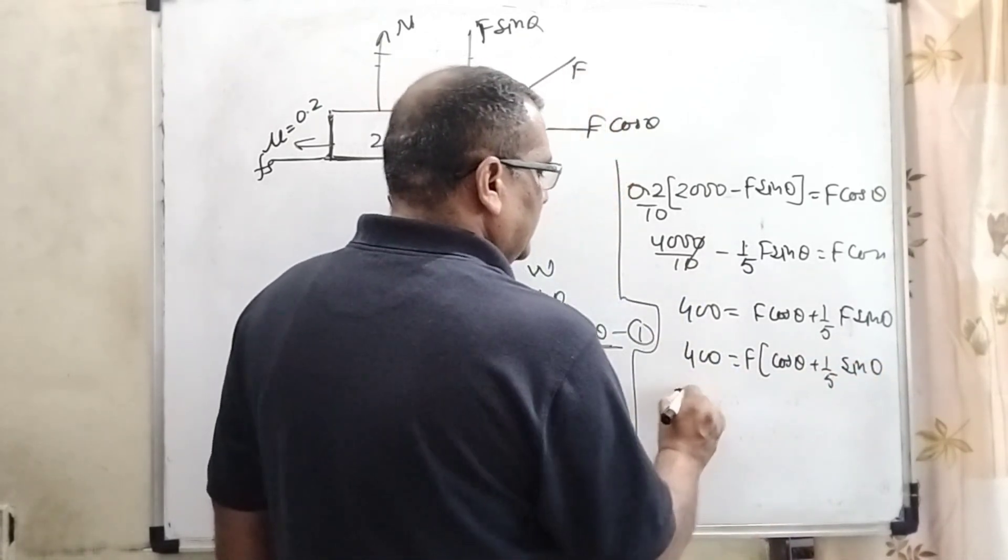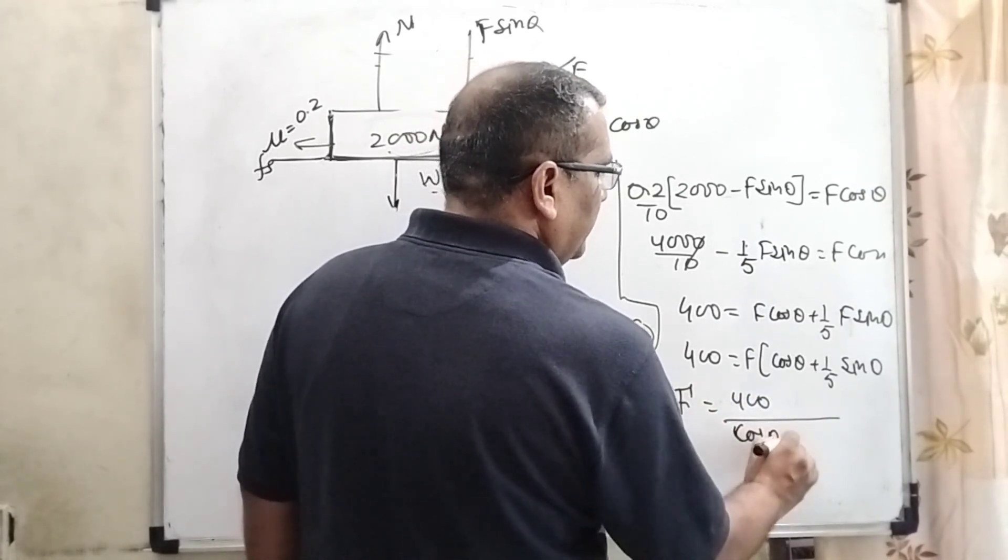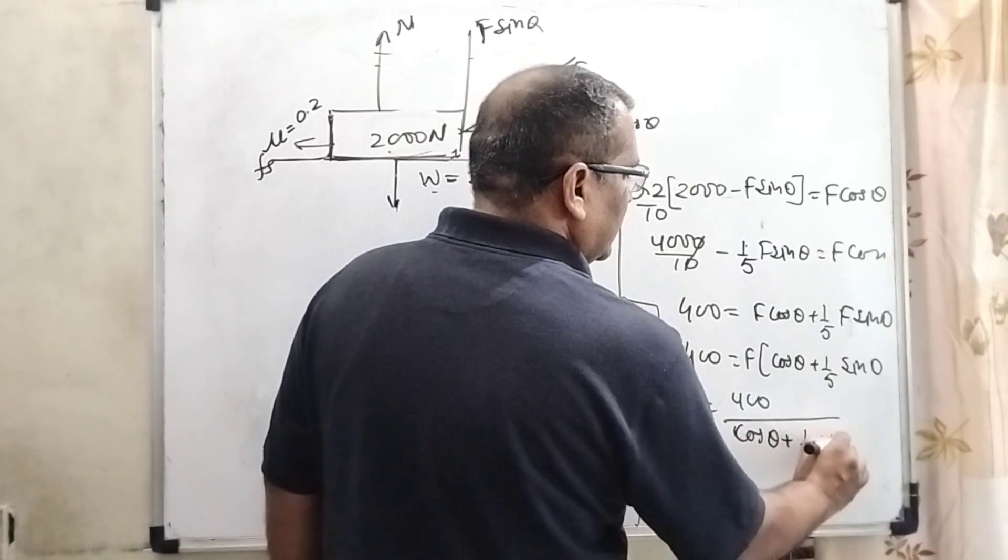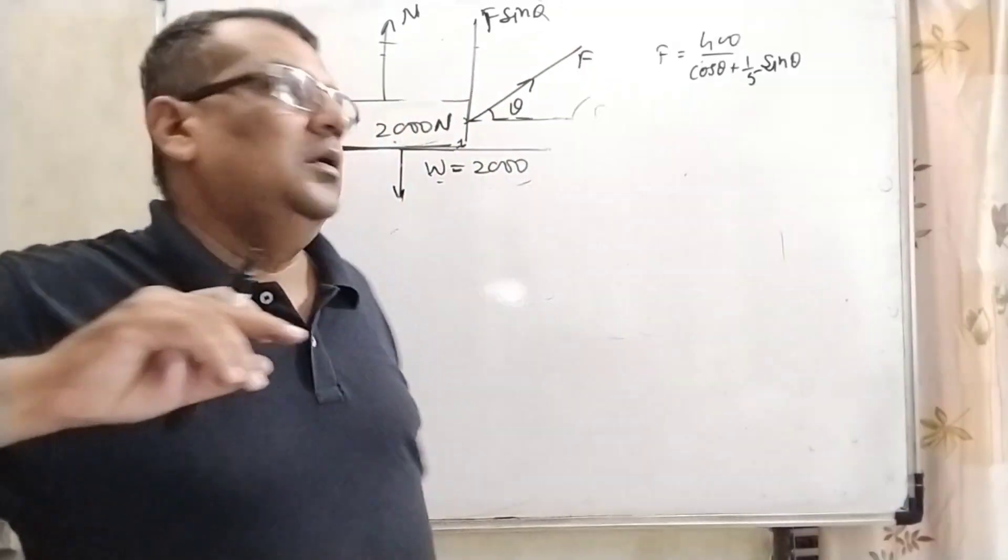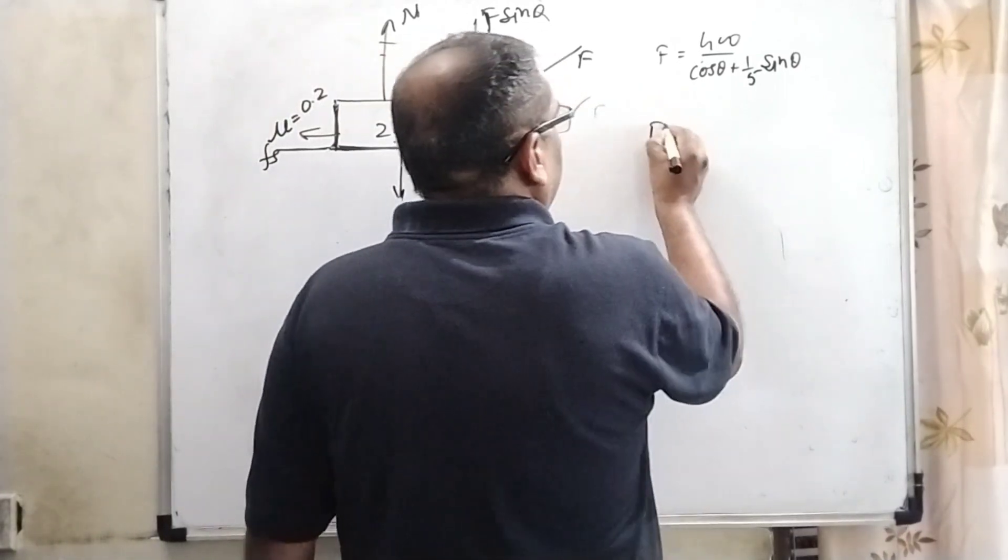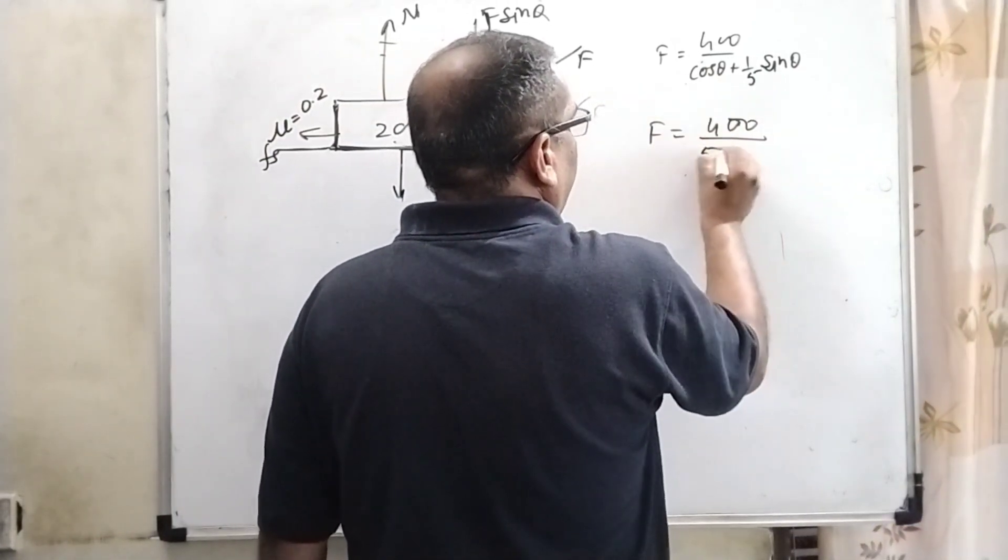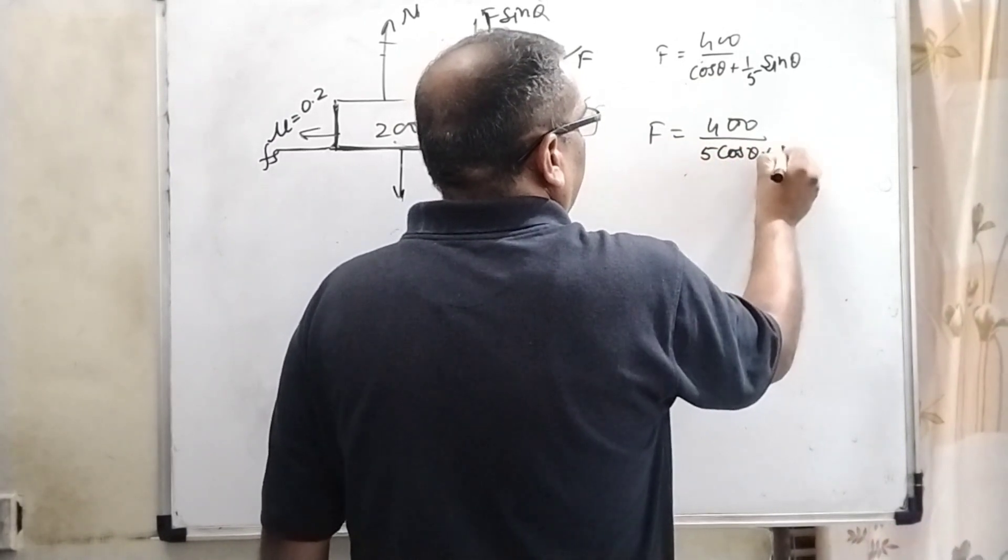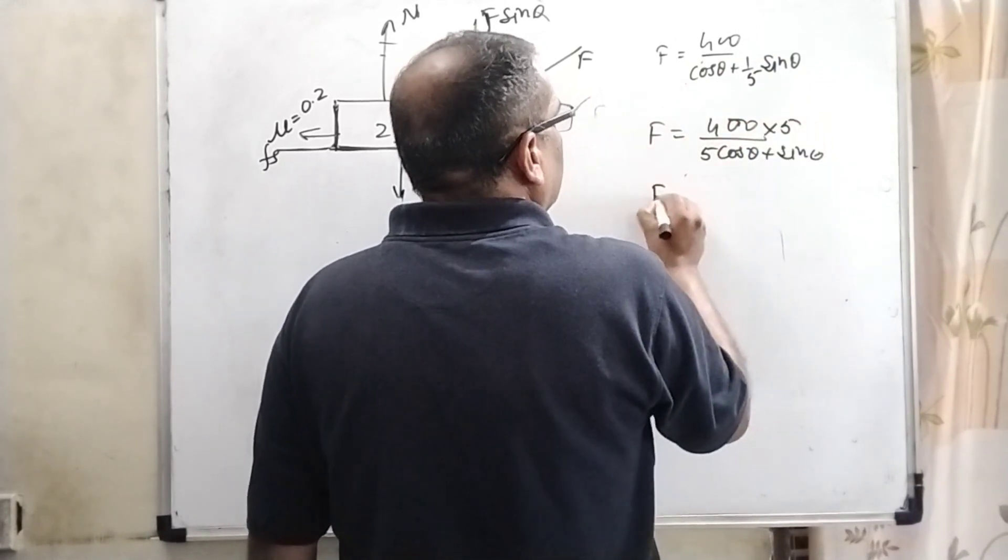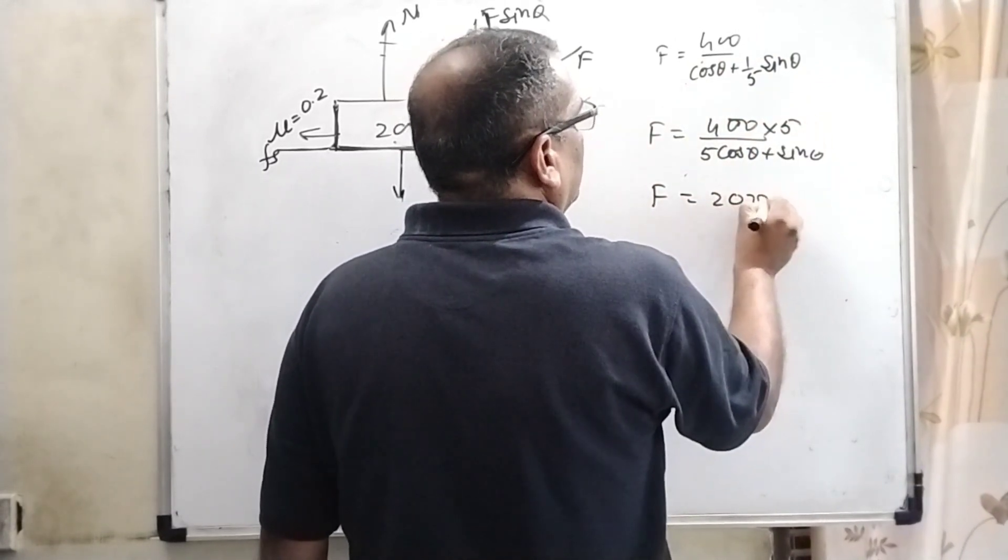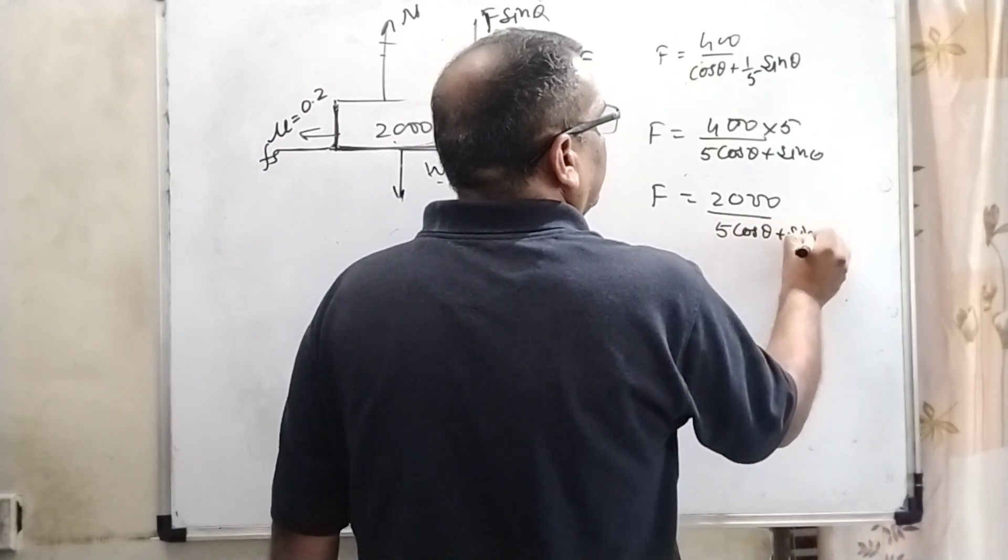Then 400 equal to F cos theta plus one-fifth F sin theta. Here F gets common. F equals 400 upon cos theta plus one-fifth sin theta. Now simplify it.